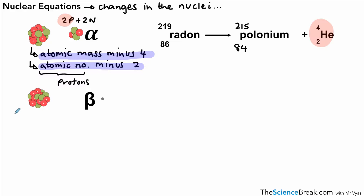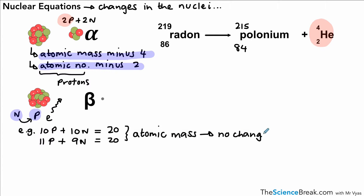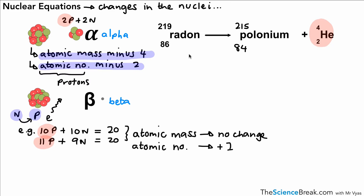With beta decay, remember that a neutron changes into a proton and an electron; the electron is ejected as the beta particle. If we had a nucleus with 10 protons and 10 neutrons — mass number 20 — a neutron changes into a proton, giving us 11 protons and 9 neutrons, but the mass number is still 20. So in beta decay, there is no change in the atomic mass. The atomic number increases by one because we've gained one proton.